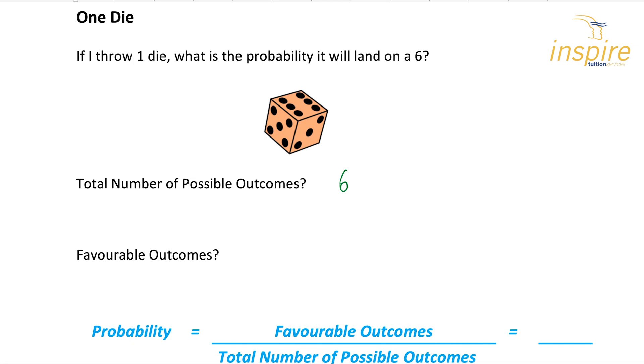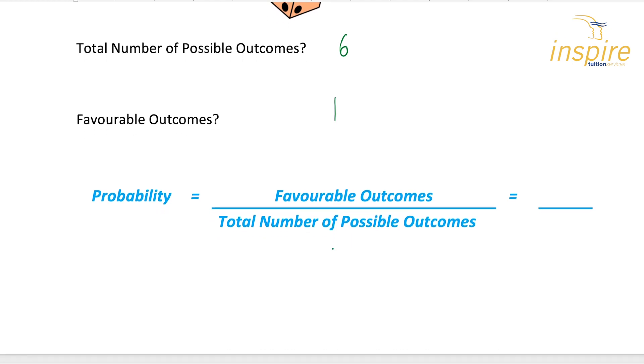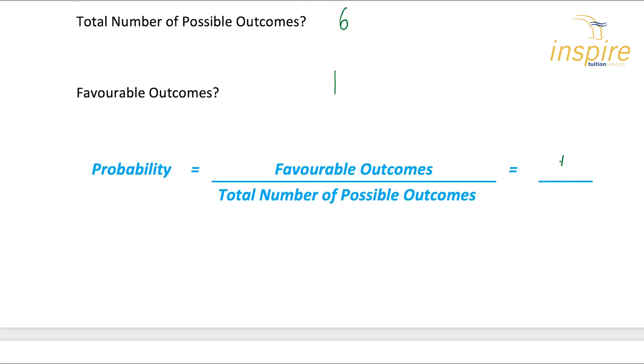Favourable outcomes. Now what does favourable outcomes mean? Well, let's look at what the question is asking us. It says, if I throw one die, what's the probability it will land on a six? So we're looking for it to land on a six. That's what our favourable outcome is. So we look at it and say, how many of the faces on the die have a six on them? Well, there's only one, because it's a normal die - one, two, three, four, five, six. It only has one. So this is quite a straightforward example because we can now look at this and say the favourable outcomes that we want is one and the total number of possible outcomes was six. So our answer is one sixth.